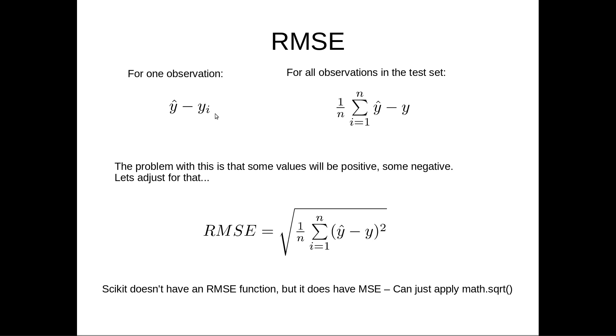Okay, so that's one observation, but I have in my test set many observations. So for many observations, what I would do is I would do the same thing, y hat minus y, so I get the difference, and then I average that distance. So I take the difference of all the observations, I add them all up, and I divide by the total number of observations, and that gives me the average difference.